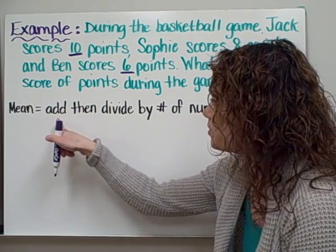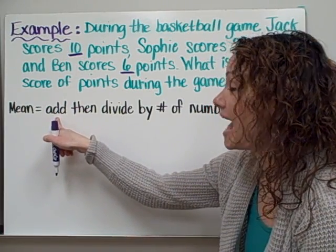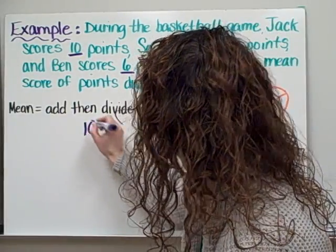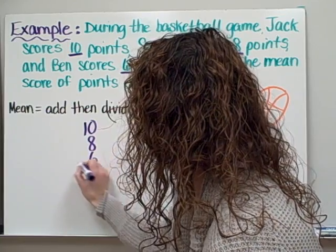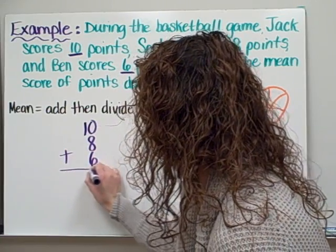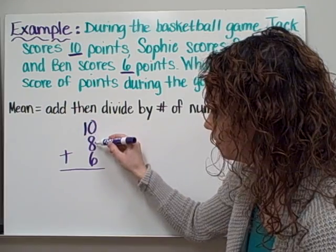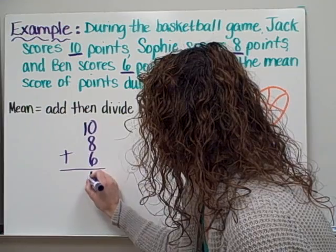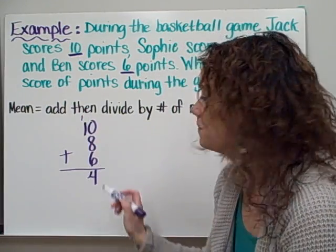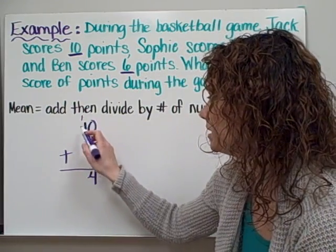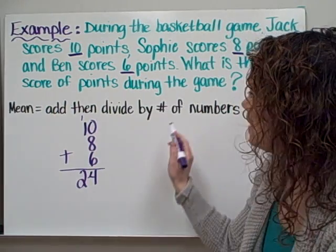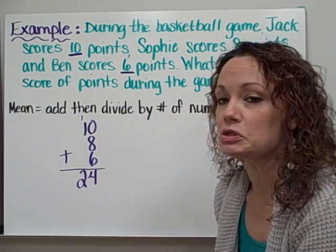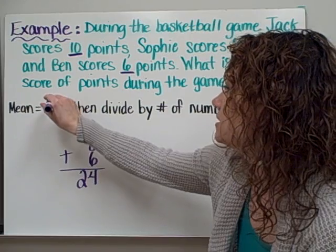What I need to do with all those numbers when finding the mean is start with step one: add all the numbers given to me. So I'm going to add up 10, 8, and 6. Starting in the ones column: 0 plus 8 equals 8, and 8 plus 6 equals 14. We put down the 4 and carry the 1. Then in the tens place, 1 plus 1 equals 2. So I've found the sum of all the points — 24 — by adding those numbers. Step one is done.